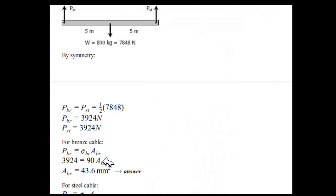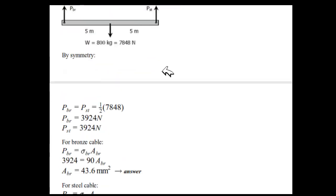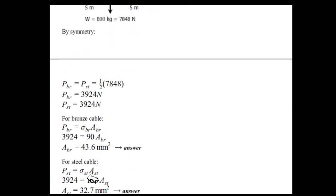Now for steel cable, same procedure will follow. P steel equals stress into area, and here only the stress value is different, you can see that is 120 megapascals. For 120 megapascals, you have got area of steel 32.7 mm squared.